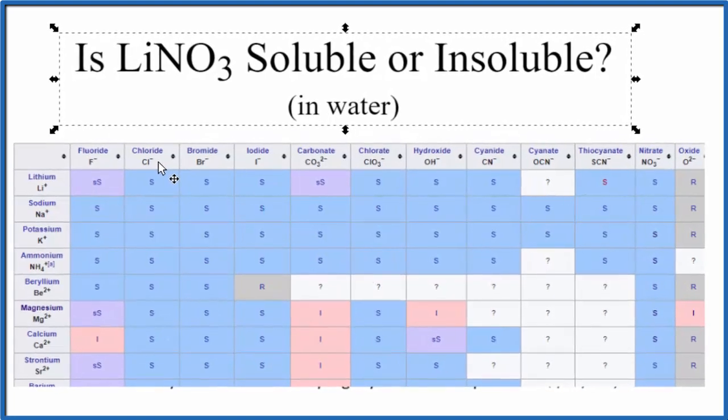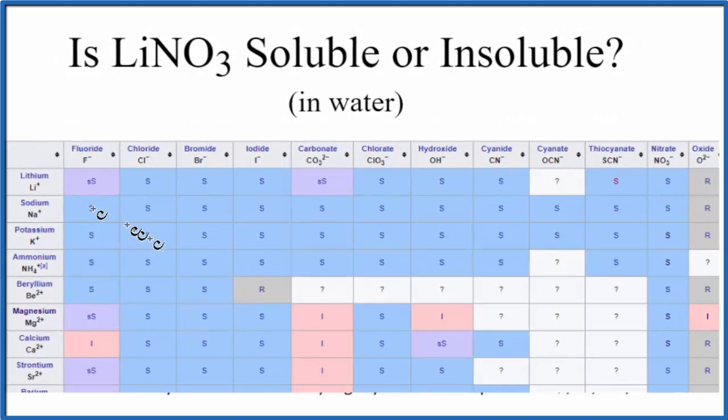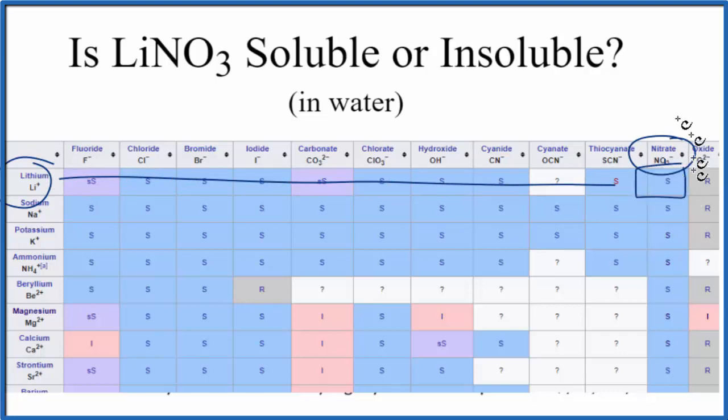We can find lithium right here. We find lithium, then look for the nitrate ion over here. We go across and go down, and you see that lithium nitrate, LiNO3, is soluble in water according to both the solubility rules and our solubility chart.